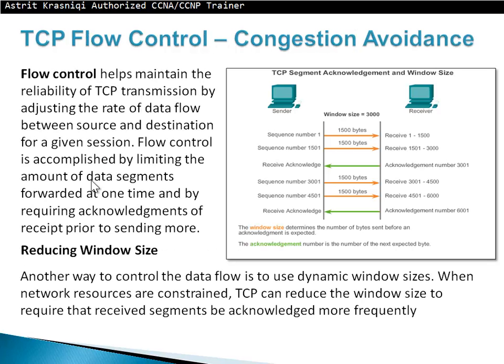TCP flow control and congestion avoidance: flow control helps maintain the reliability of TCP transmission by adjusting the rate of data flow between source and destination for a given session. It is accomplished by limiting the amount of data forwarded at one time and requiring acknowledgement of receipt before sending more. If acknowledgements are not received, the window size can be reduced — for example, reducing from 500 bytes to 300 bytes. TCP uses a dynamic window size: when network resources are constrained, TCP can reduce the window size to require that receiving segments be acknowledged more frequently.